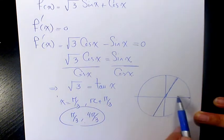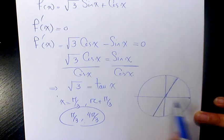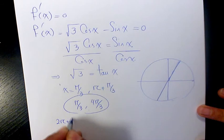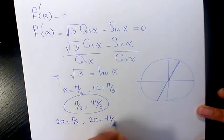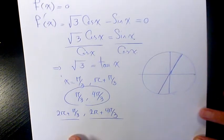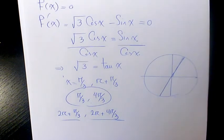These are the two answers from 0 to 2π. For 2π to 4π, we have 2π + π/3 and 2π + 4π/3. We have the same pattern for every cycle, so we have unlimited answers to this question.